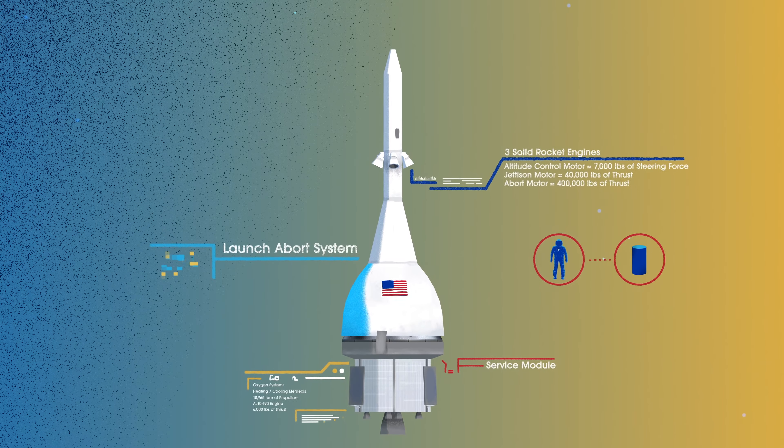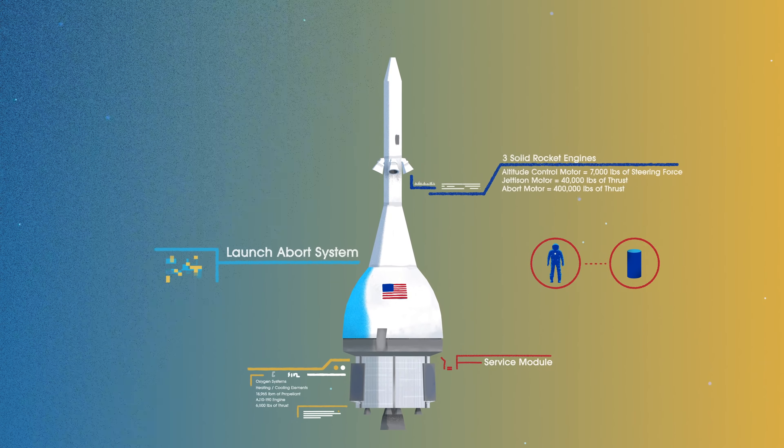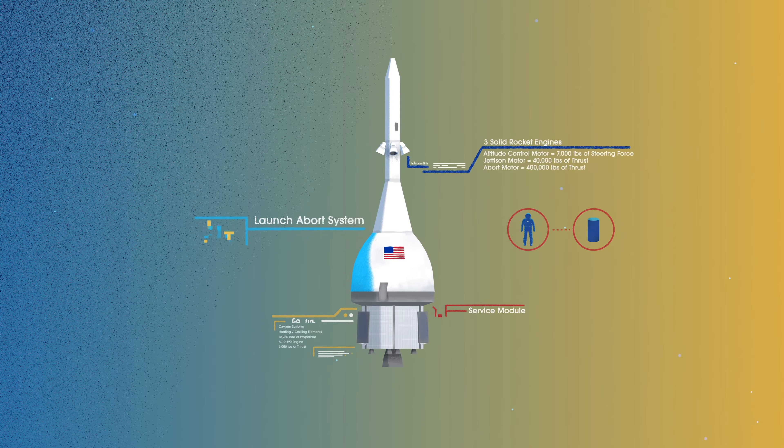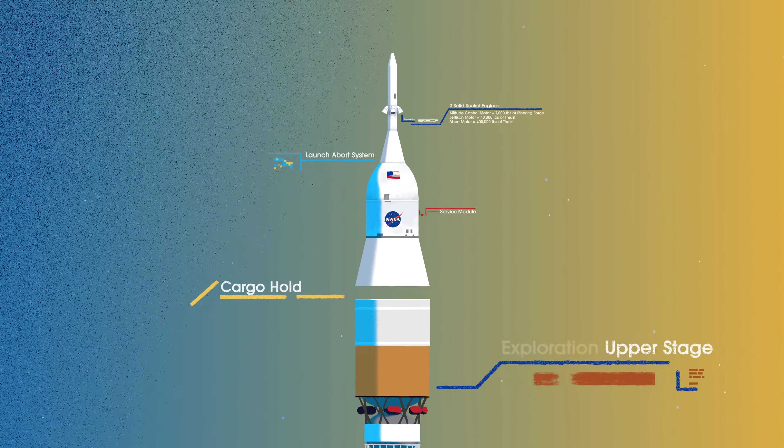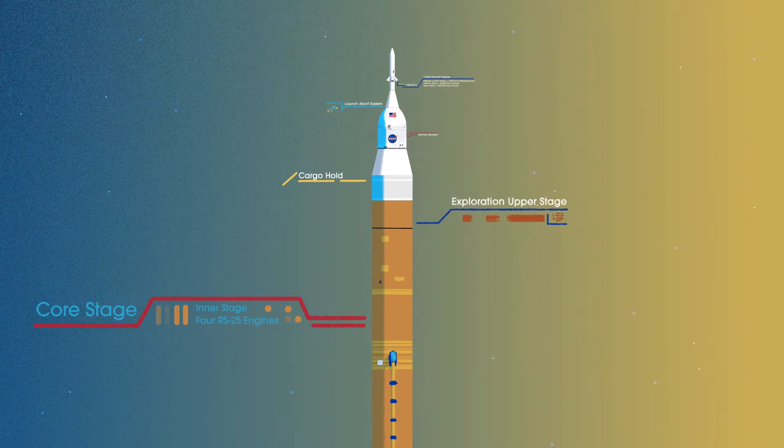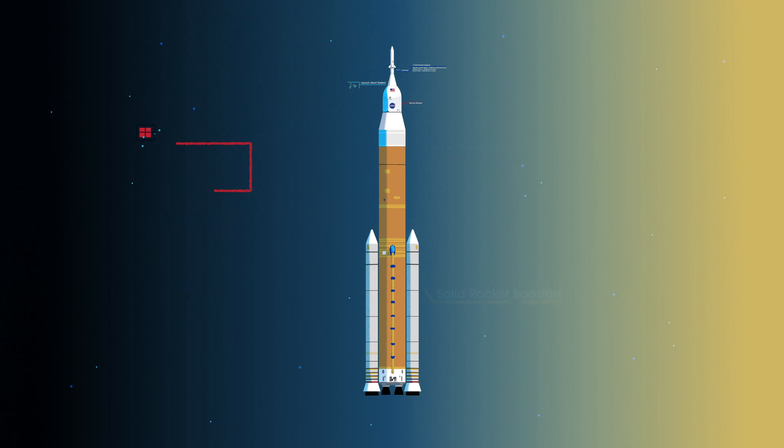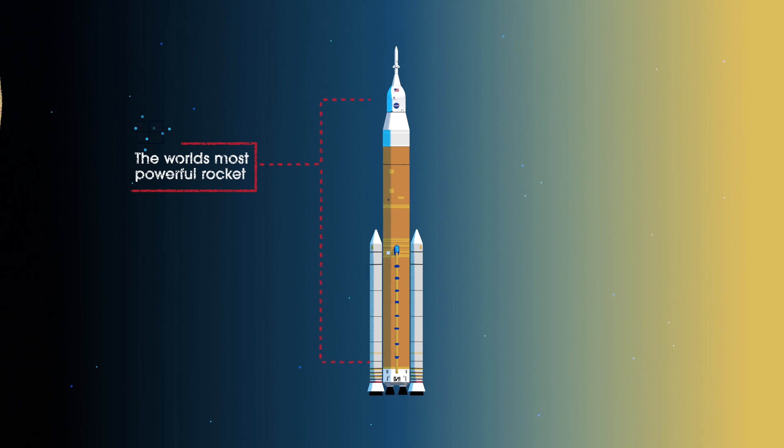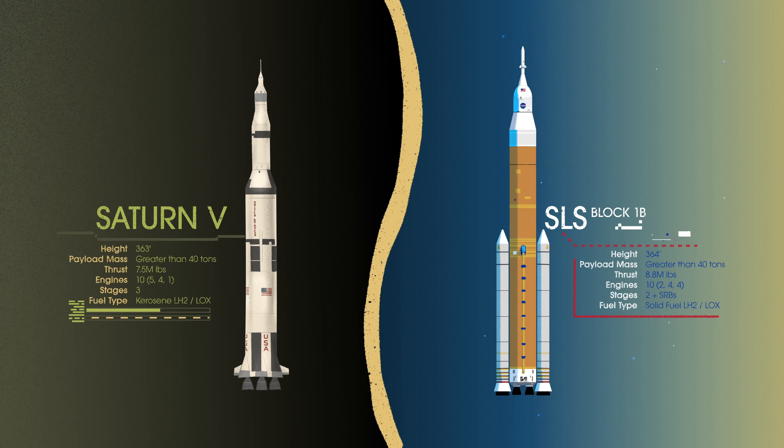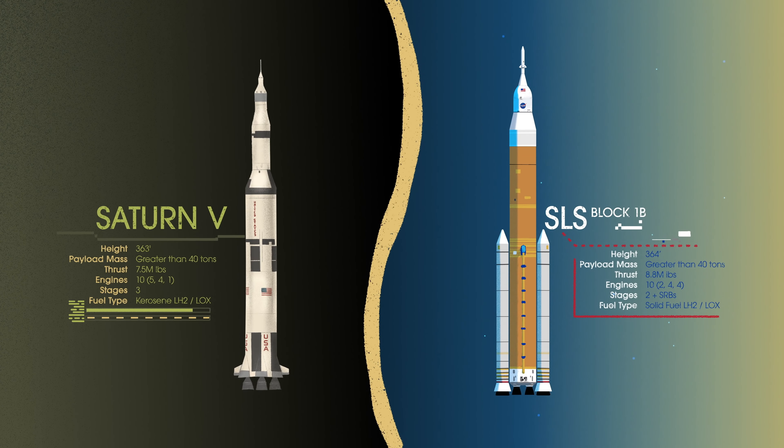To accomplish the task of launching our crew and heavy payloads, NASA is building the Space Launch System, comprising a cargo hold, an exploration upper stage, a massive core stage, and two extended solid rocket boosters. Altogether, this is the world's most powerful rocket, and it exceeds the legendary Saturn V of the Apollo era in numerous ways.